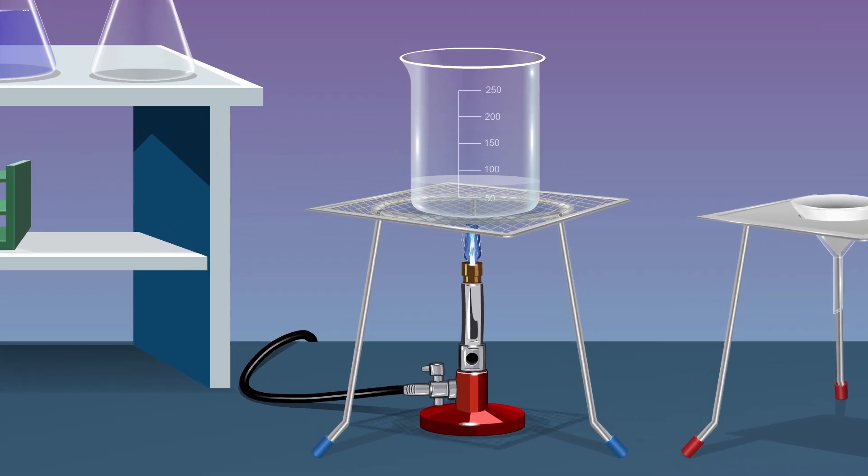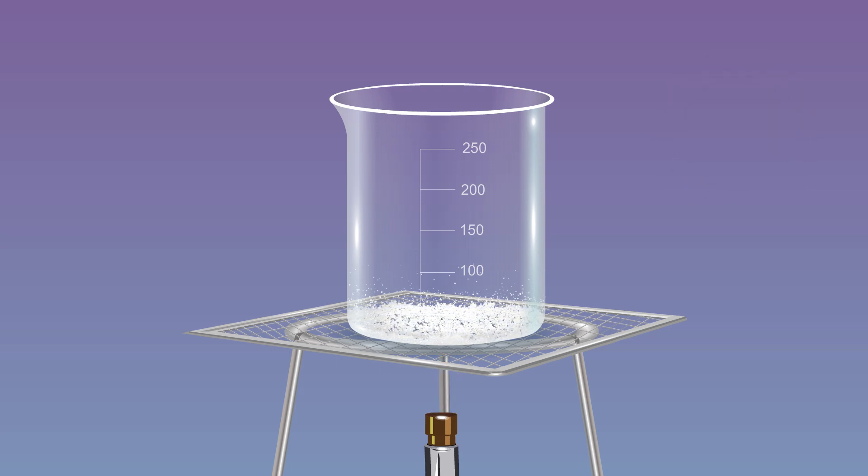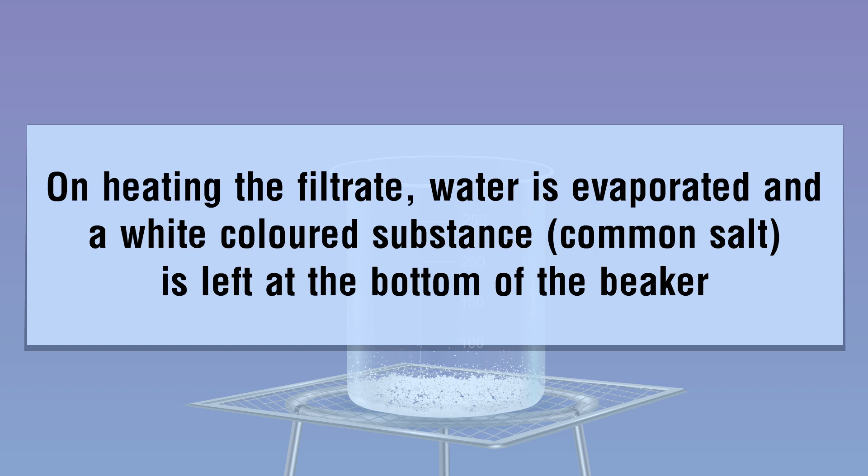Heat the filtrate obtained in the previous step using a burner. Heat the content until water evaporates. We observe on heating the filtrate, water is evaporated and a white colored substance, common salt, is left at the bottom of the beaker.